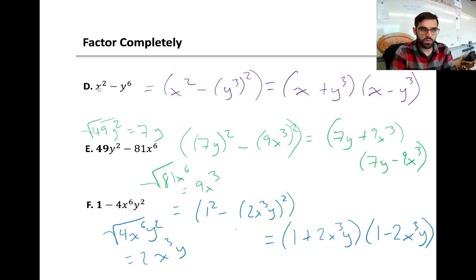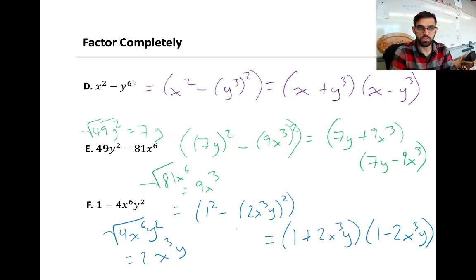For the first example here, the a value is just x. The b value: the square root of y to the power of 6 is y to the power of 3, because we can write y to the 6 as y to the 3 squared — we split up the exponent. So b equals y to the power of 3. Our a value is x, our b value is y cubed, and here's the factored form: x plus y cubed times x minus y cubed.